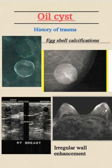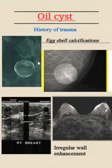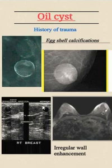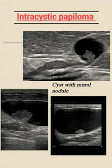Oil cysts usually have a history of trauma, not always. They have a very characteristic peripheral eggshell calcification. Whenever you see this pattern of peripheral axial calcification, it is always fat necrosis — a calcified oil cyst. On ultrasound, it appears as a simple cyst that may have wall calcification with linear hypoechoic acoustic shadowing and sometimes minimal irregular wall enhancement.